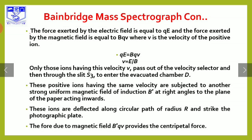The force exerted by the electric field is equal to qE, and the force exerted by the magnetic field is equal to BqV, where V is the velocity of the ion. When the electric force equals the magnetic force, the deflection is zero and the ion travels in a straight line. So qE equals BqV.